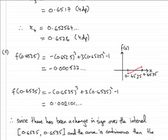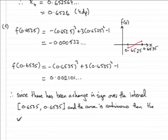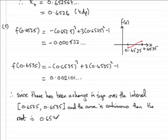...then the root is 0.653 to three decimal places. Hopefully you've understood that one, and that brings us to the end of question four.